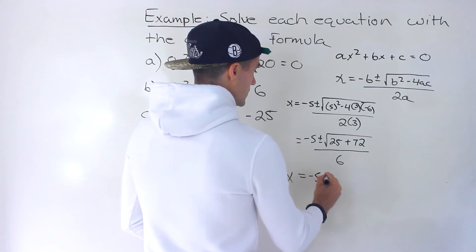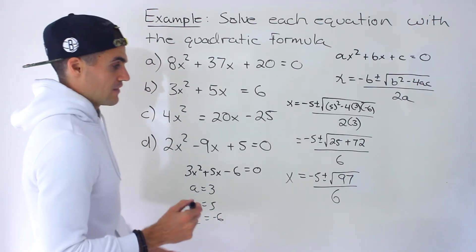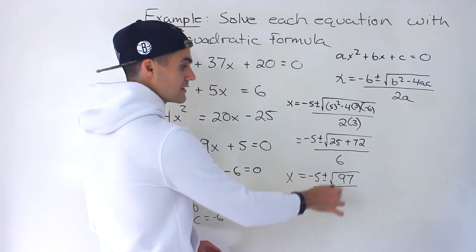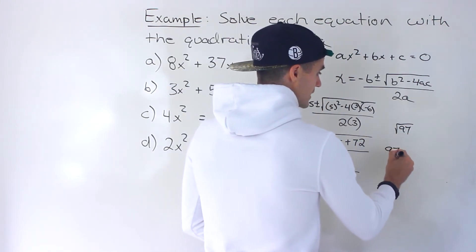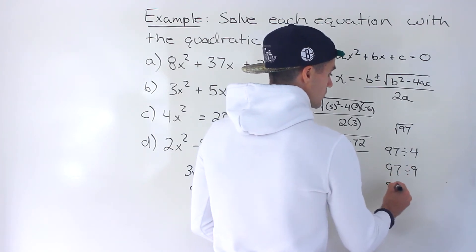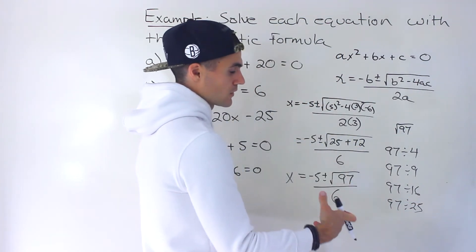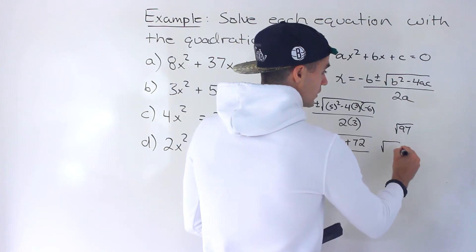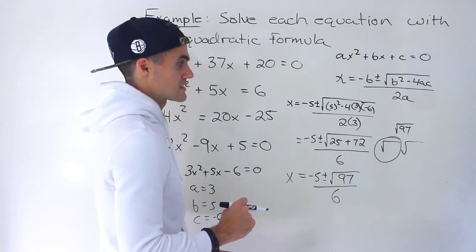We end up with negative 5 plus or minus root 97, all over 6. This root 97 actually doesn't simplify any further. If you try to simplify root 97, you can't divide 97 by a perfect square — not by 4, not by 9, not by 16, not by 25, not by 36, et cetera. You want to see if you can split the value by dividing by a rootable number so that one part becomes an integer, but root 97 doesn't simplify any further.